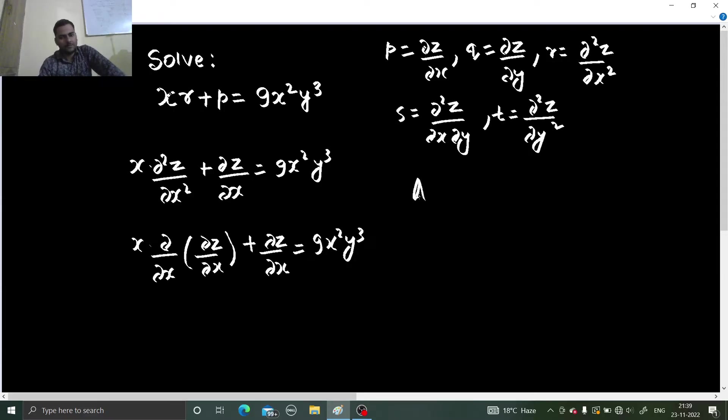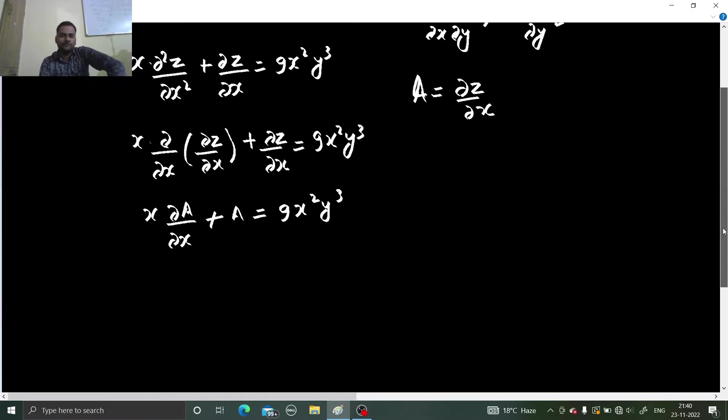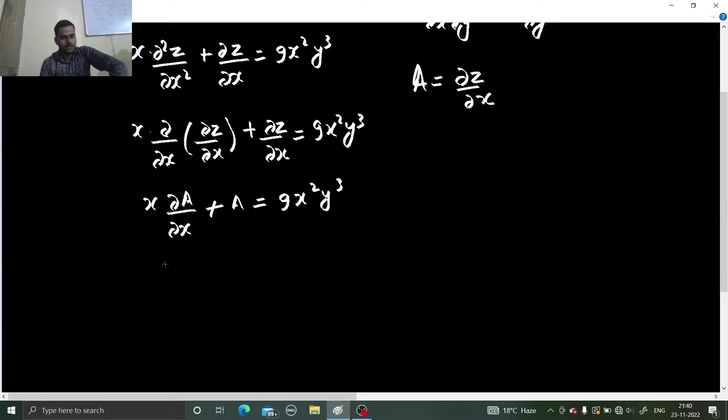For some time, let us assume A to be equal to del z by del x. So x del A by del x plus A equals to 9x square yq³. Or we can write del A by del x plus 1 by x times A equals to 9xyq³.